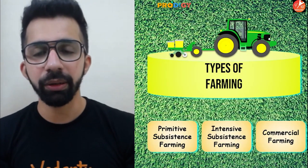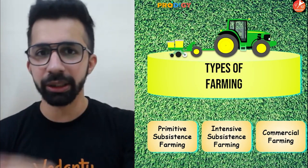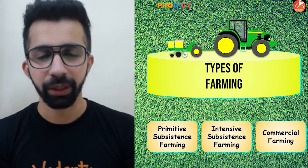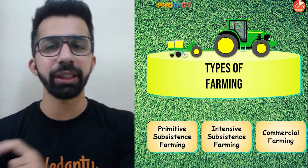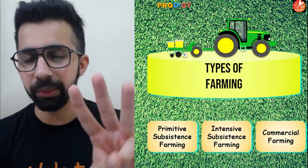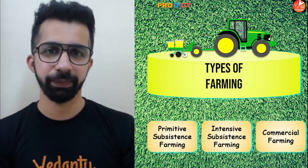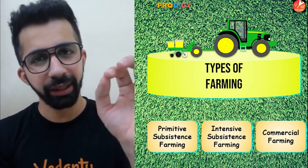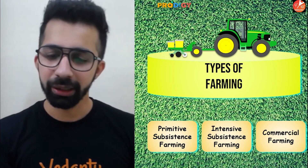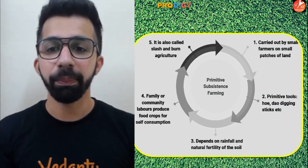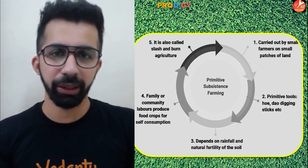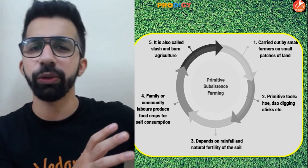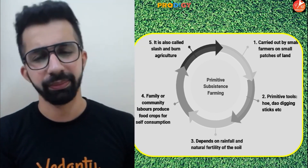Farming can be classified into three major types: primitive subsistence farming, intensive subsistence farming, and commercial farming. Let's understand each type in detail. The very first one is primitive subsistence farming — 'primitive' meaning it has been followed since ancient times.